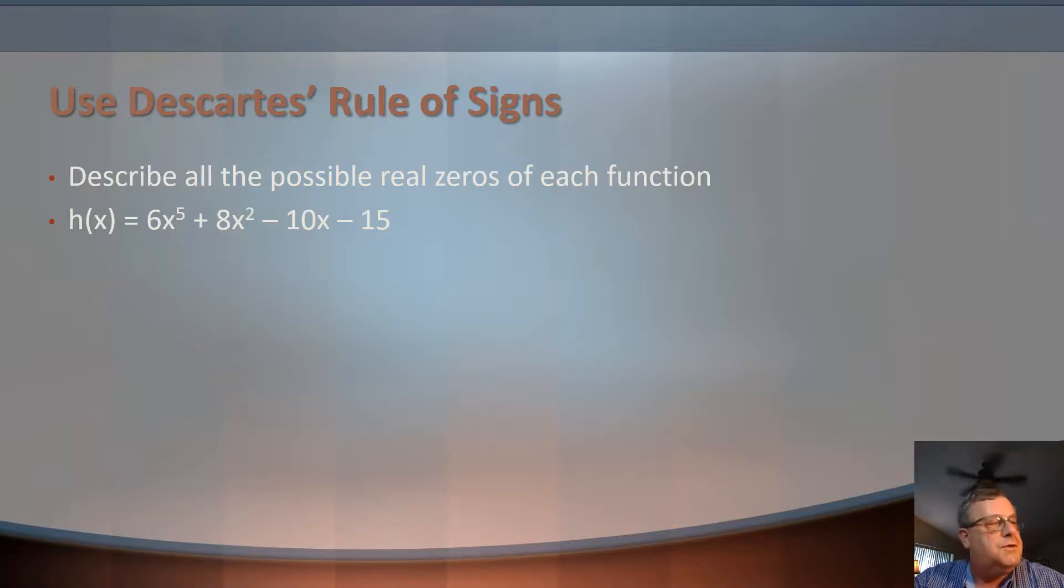We've been considering different tools, techniques, or rules that help us narrow the field of what type of real zeros that we may actually have in a polynomial function. One of these is called Descartes' Rule of Signs. Descartes' Rule of Signs can tell us the number of possible positive real zeros and the number of possible negative real zeros in a function, looking at the changing of signs between f of x and then f of negative x.